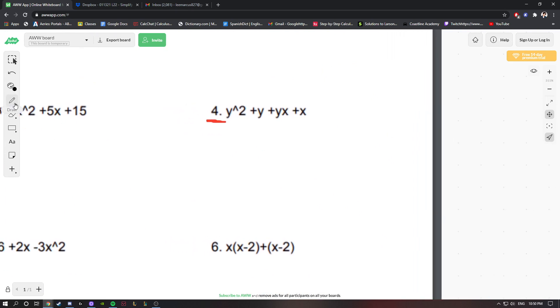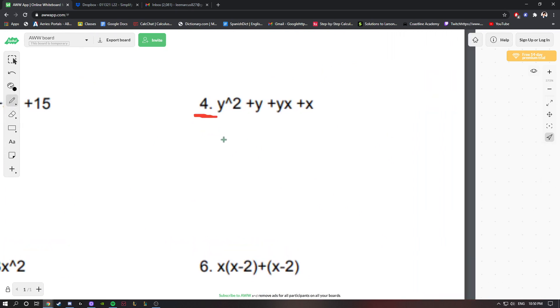Another example is number 4. This is y² + y + yx + x. If you think of this in two groups—I'll use colors—we could use yellow and green. We want to factor out something common in both of these groups. In this yellow group, y² + y, we could factor out y. When we factor out y, we're left with (y + 1).